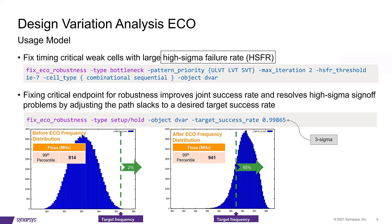Notice in the first bullet here, we use a command called fixed ECO robustness type bottleneck to perform ECO on such weak cells. Here, ECO performs a VT swap based on user-specified pattern priority. The pattern priority is simply the lowest to highest variation of VT class devices. For example, ULVT comes first.